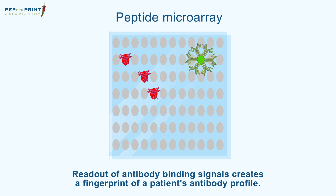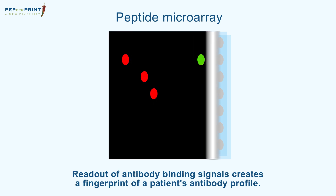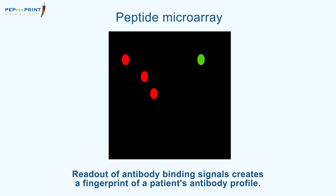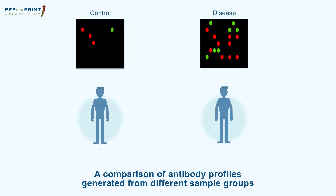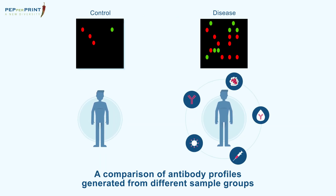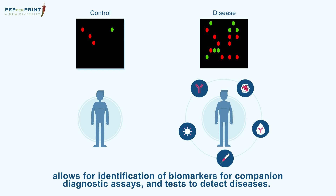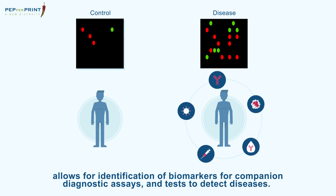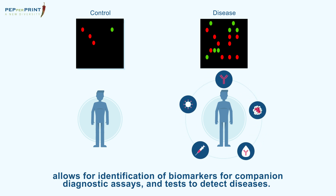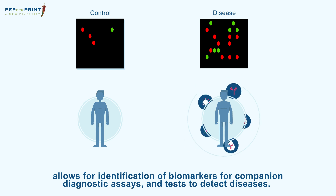Readout of antibody binding signals creates a fingerprint of a patient's antibody profile. A comparison of antibody profiles generated from different sample groups allows for identification of biomarkers for companion diagnostic assays and tests to detect diseases.